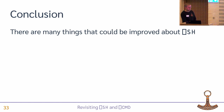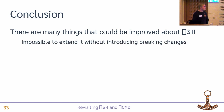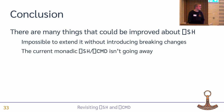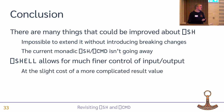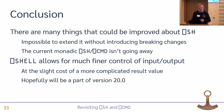To conclude, there are a bunch of things that could be improved about Quad-SH, but it's pretty much impossible to extend it without breaking stuff. The current Quad-SH isn't going away. The new Quad-Shell allows for much finer control of input and output among other things, at the cost of a more complicated result value. Hopefully this, or some variation of this, will be part of version 20.